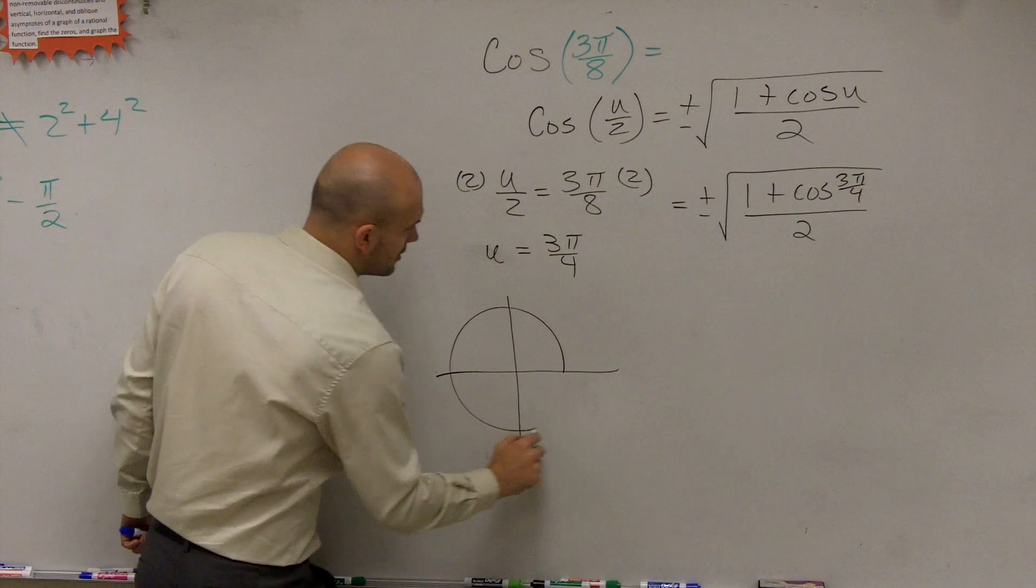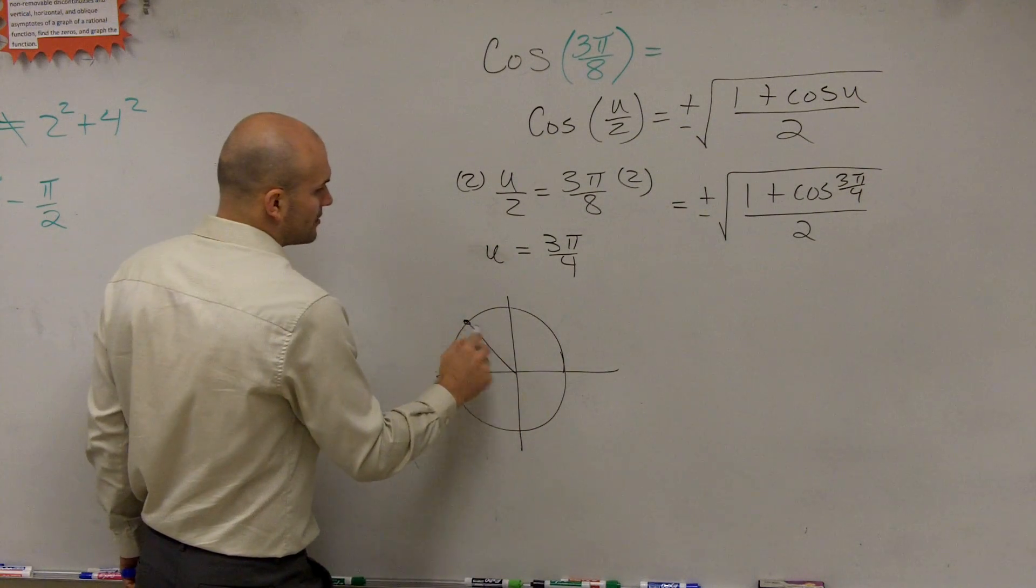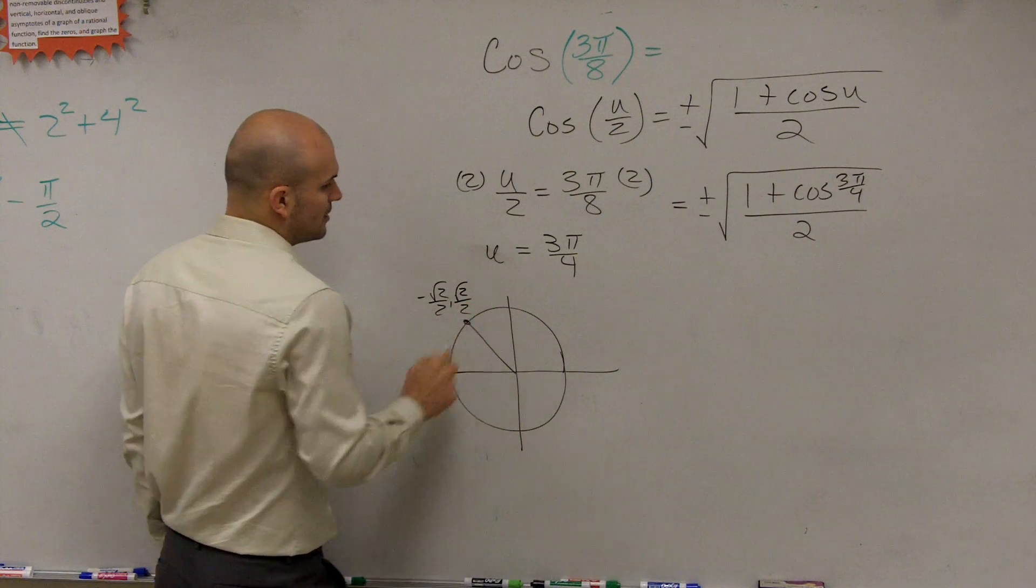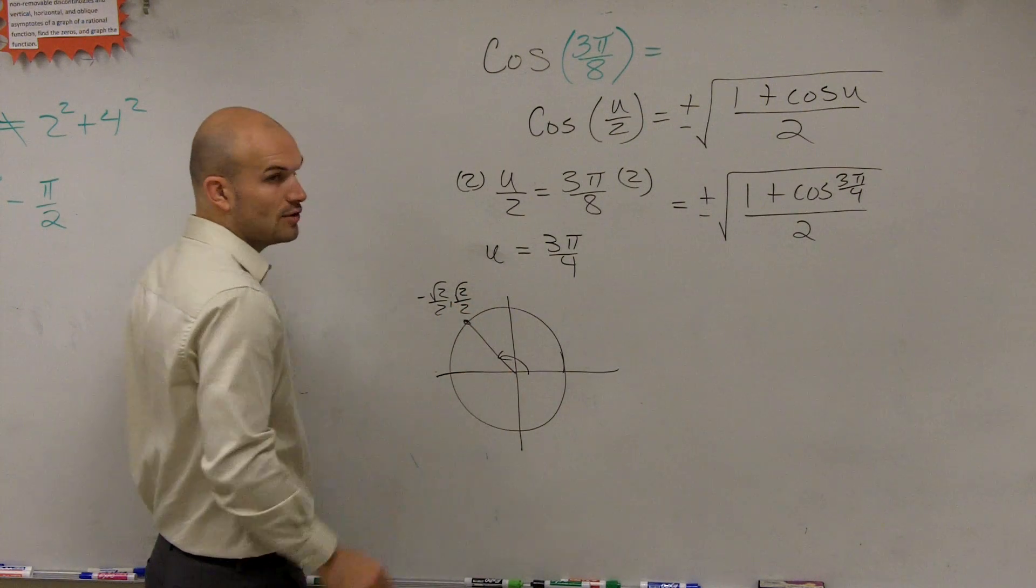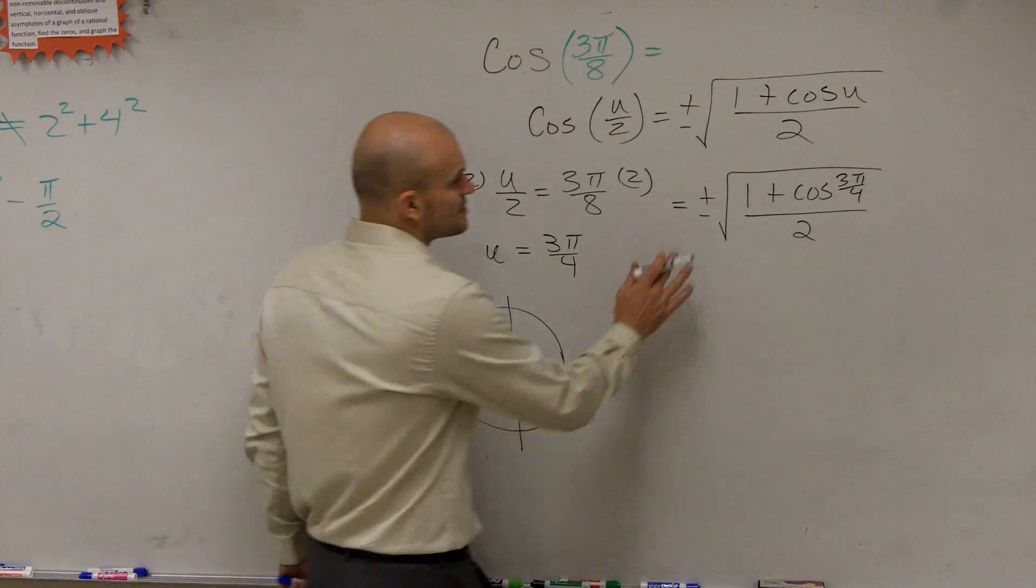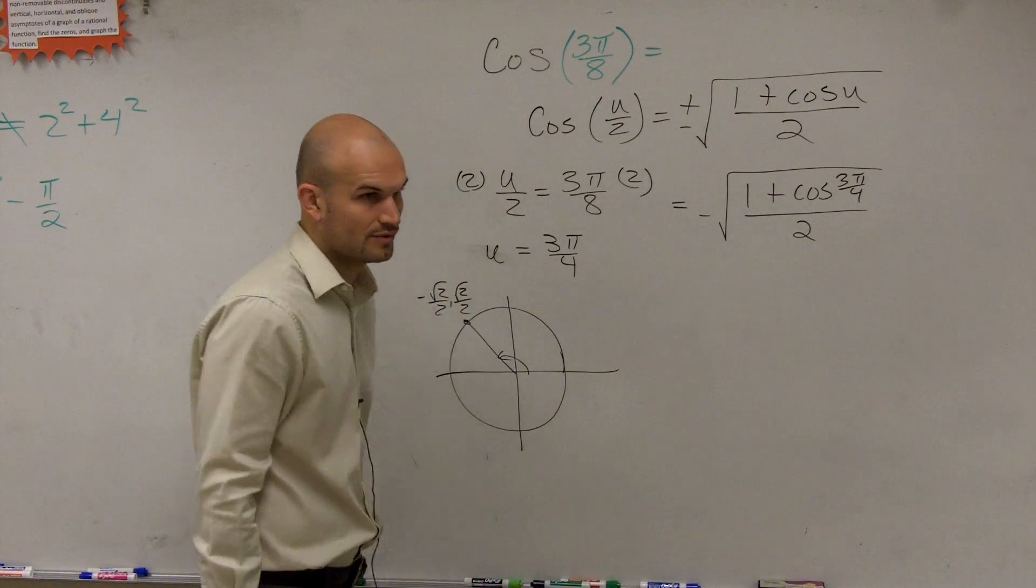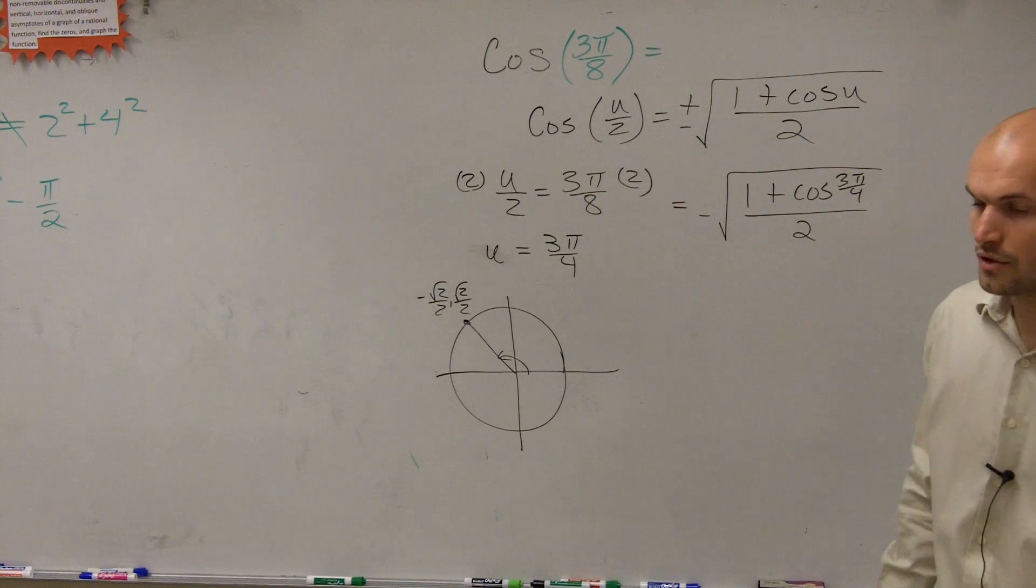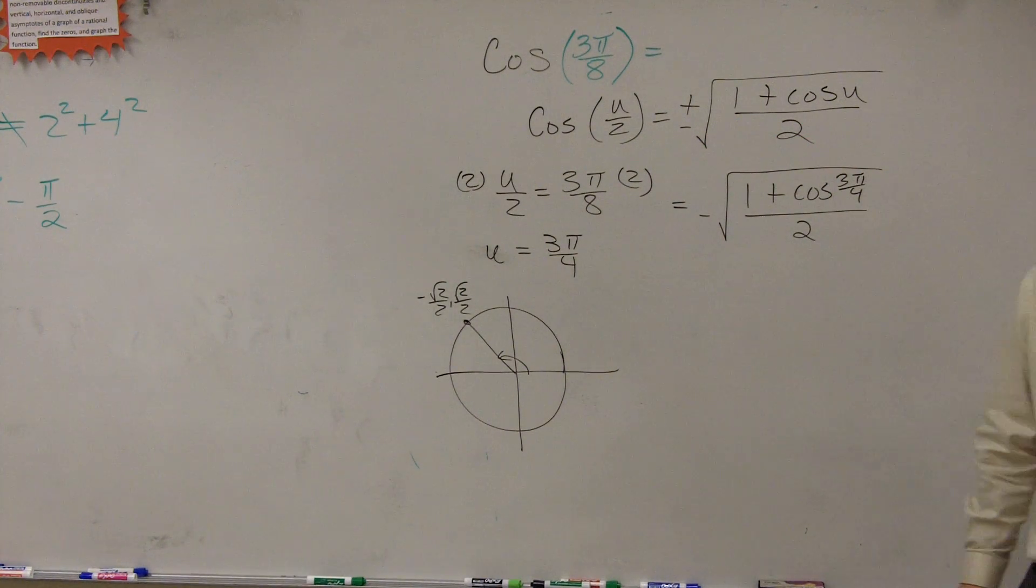For our angle of 3π/4, which we said is negative square root of 2 over 2 comma square root of 2 over 2, is the cosine value obviously positive or negative? Negative. So rather than dealing with the positive square root, we're now going to be working with the negative square root or the negative times the square root. You can't take the square root of a negative number, but you can take the negative square root.